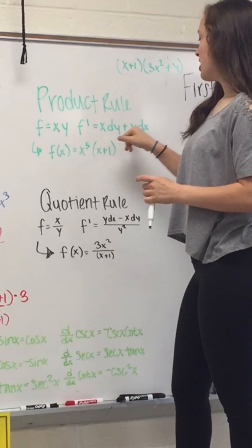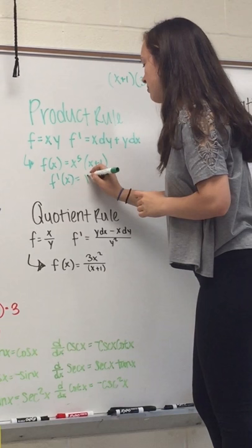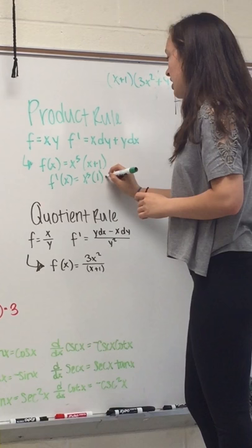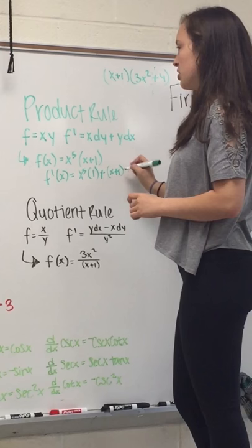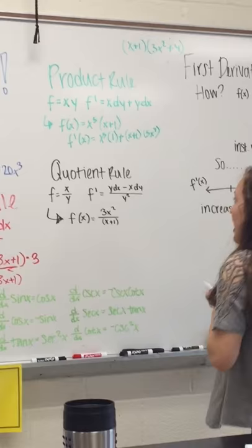So, you would want to do the first term, in this case x, times the derivative of the second, plus the second term, in this case y, times the derivative of the first. So, this would look like x to the fifth times the derivative of x plus 1, which would just be 1 from the x, then plus the second, x plus 1, times the derivative of the first. So, using the shortcut, it would be 5x to the fourth. And then you can simplify that out.